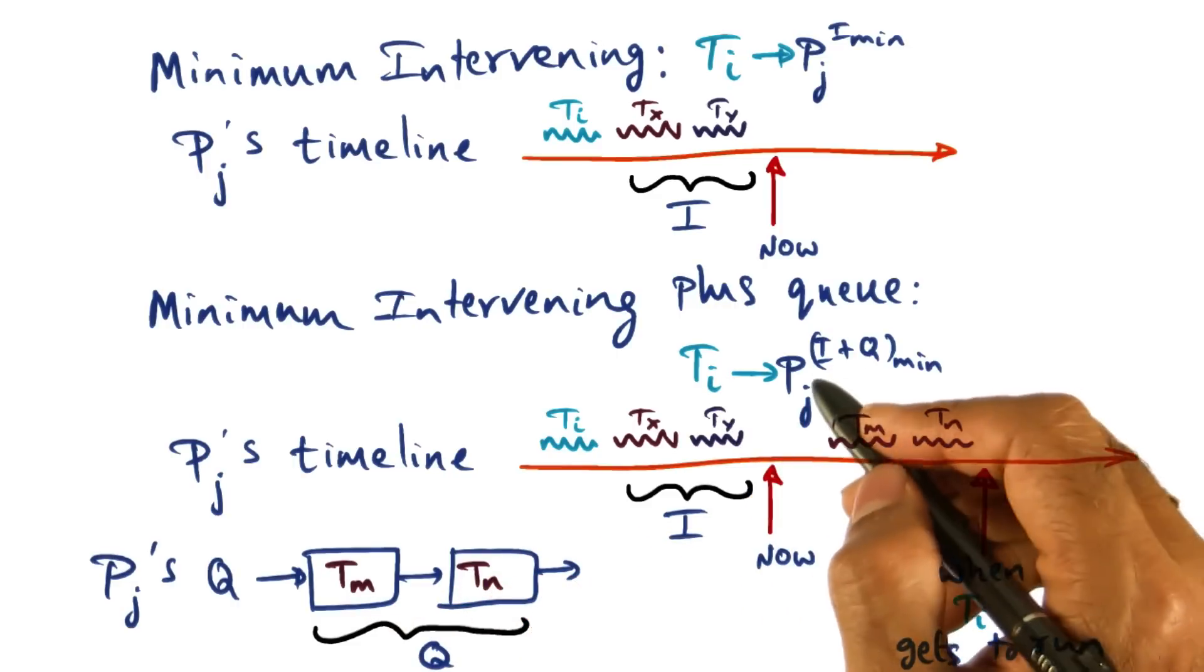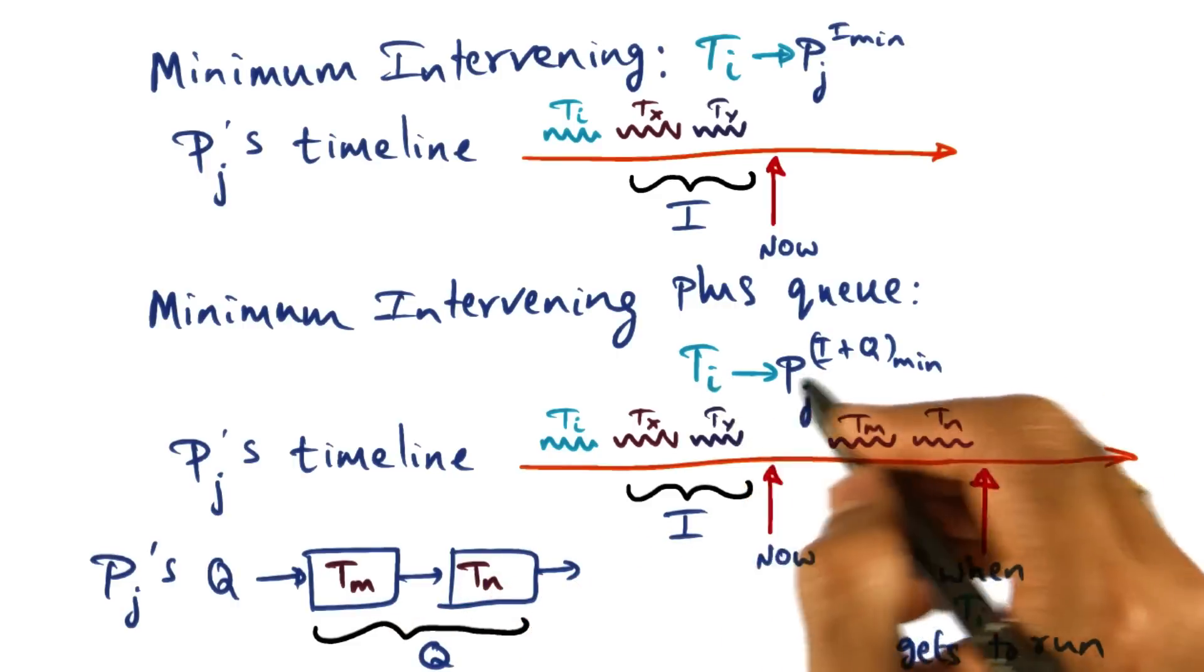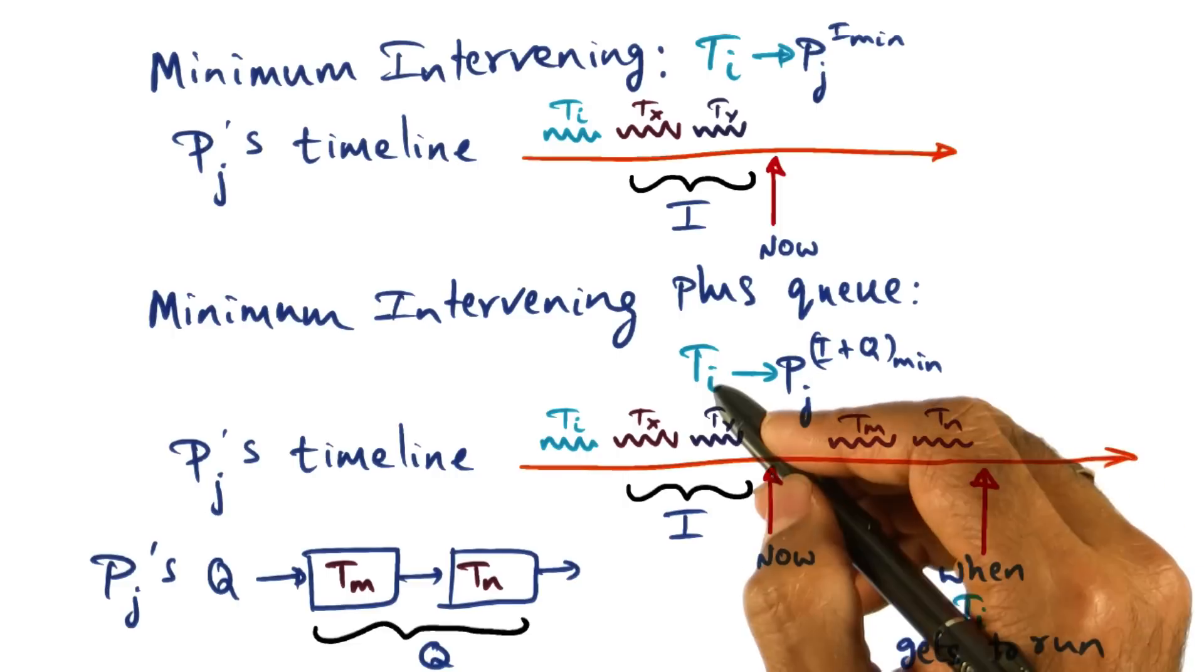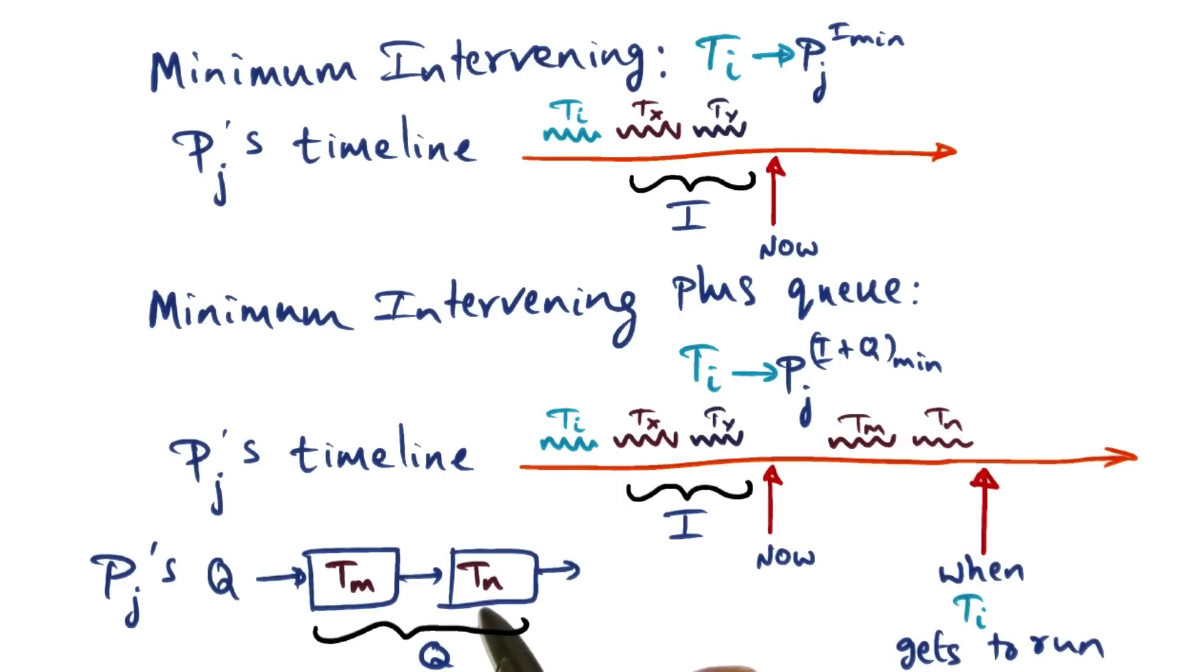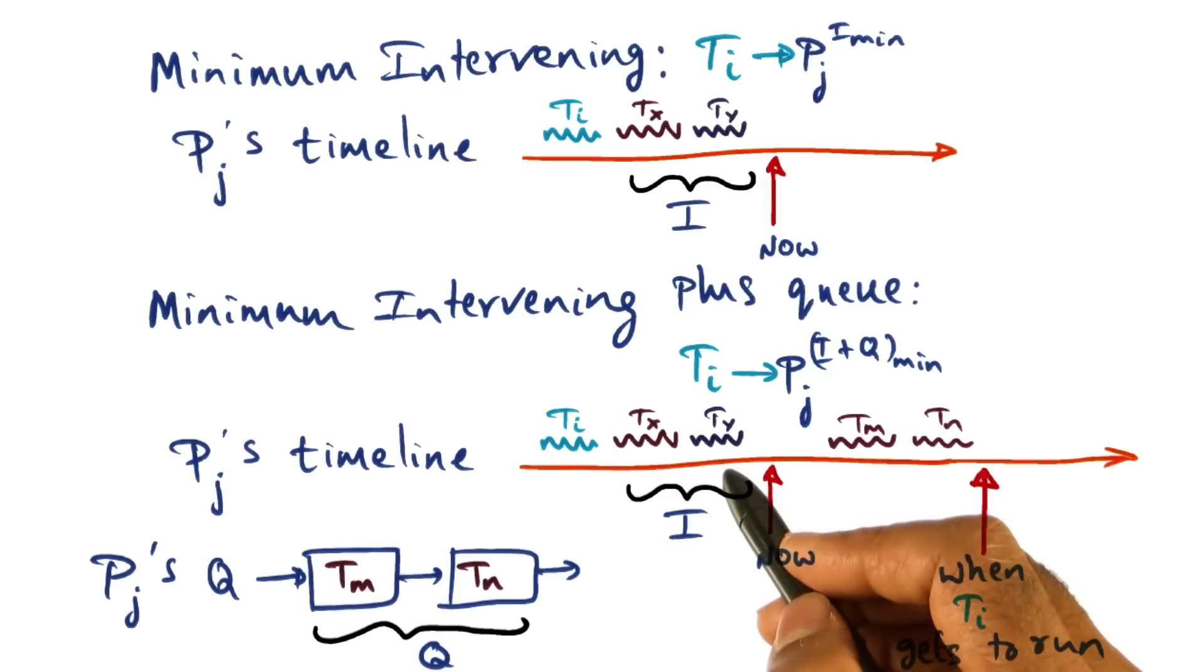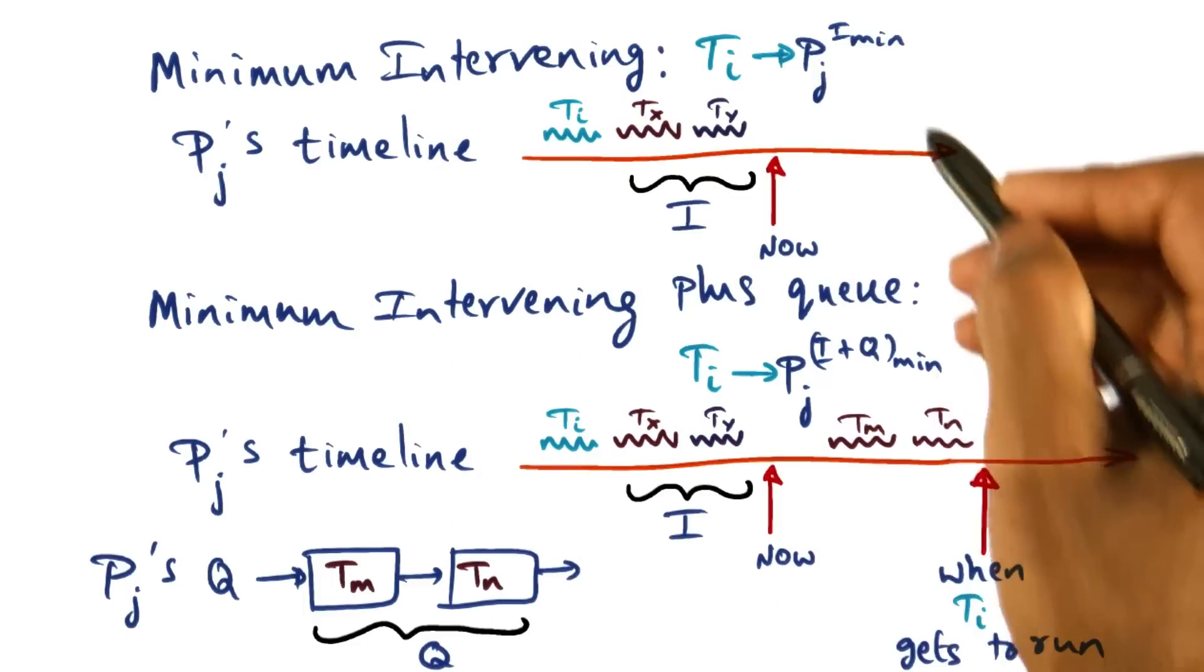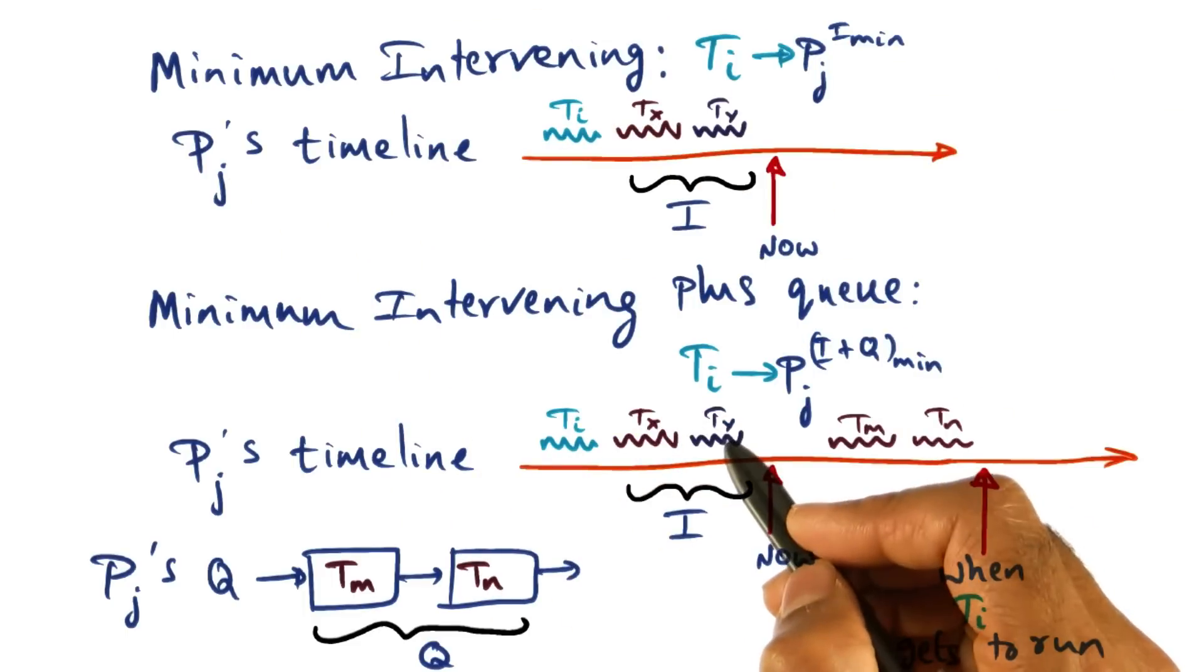And therefore, even though I'm picking the processor pj based on cache affinity, by the time ti gets to actually run, two other threads are going to run before it. So this was when ti ran last, and I might find that the affinity for ti with respect to pj is two. Just like in this previous example that I gave you, the affinity is two.